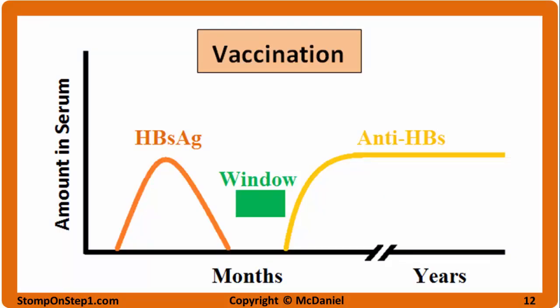Here is the graph for vaccination. The acute infection graph is essentially the same thing with an extra test added in. Starting on the far left, you give a patient the vaccine and the amount of surface antigen in the blood spikes over a short period of time. At its peak, the immune system starts to make antibodies against the surface antigen. As the amount of antibody increases and starts to bind the antigen, the amount of antigen decreases. Eventually you reach the window period here in green, where all of the antigen is bound to antibody and neither is detectable in the serum. Then the amount of antibody continues to increase until there is an excess not bound to antigen, leveling out and remaining at this level for many years — seen here in yellow.